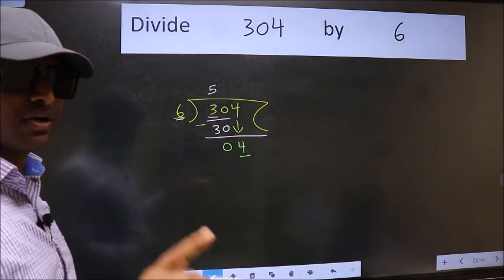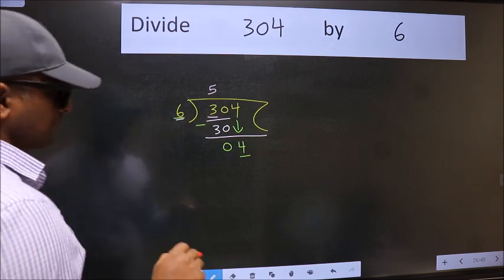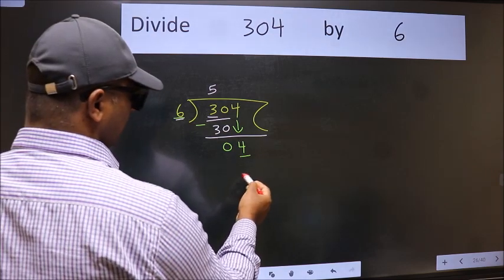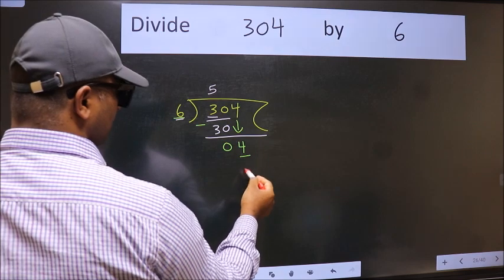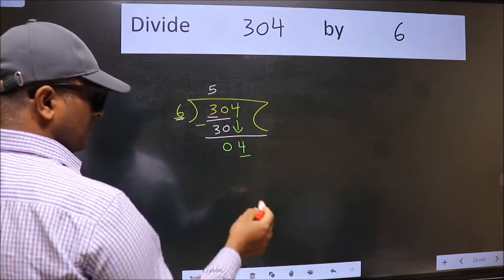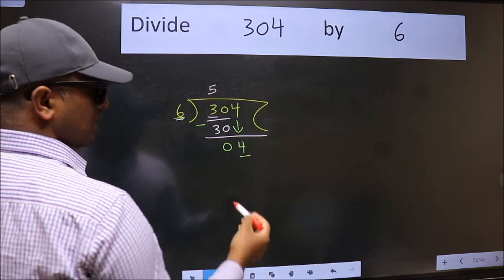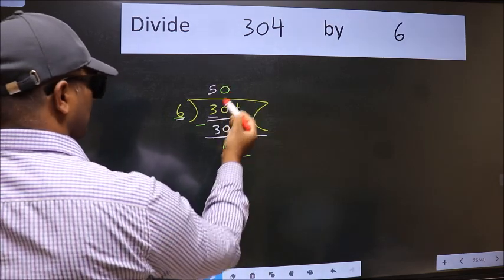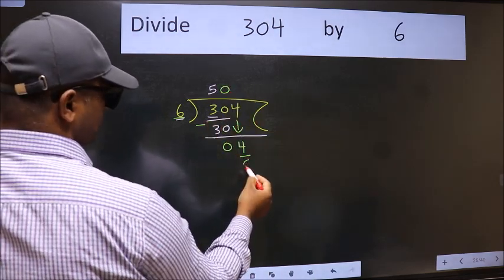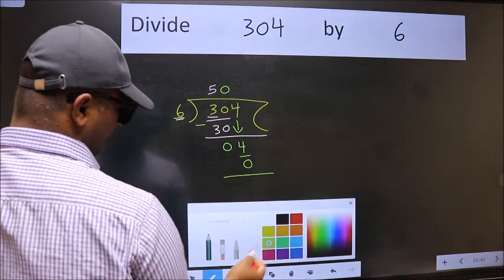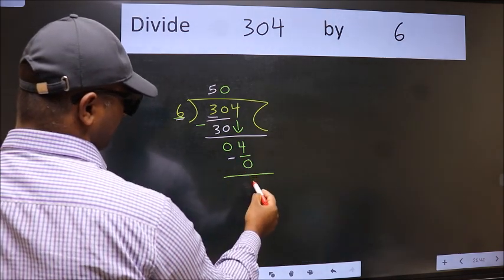Instead of that, what you should think of doing is: which number should we take here? If I take 1, we will get 6, but 6 is larger than 4. So what we do is take 0. So 6 into 0 is 0. Now we subtract and get 4.